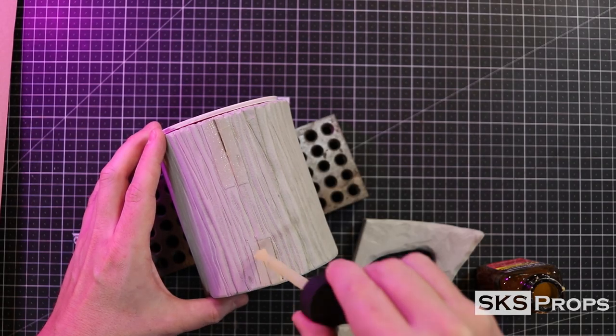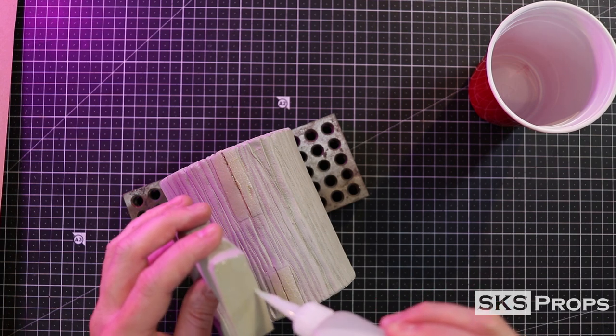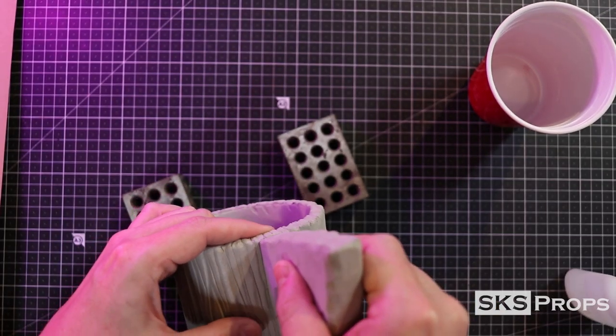I can now attach the handle to the holder, and to make sure that it's nice and stable, I'm going to be doing my double adhesive method, so I'm using a little bit of contact cement and Bob Smith super glue.